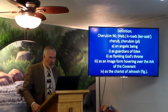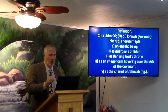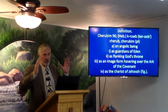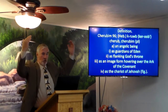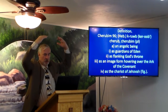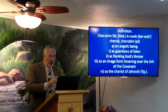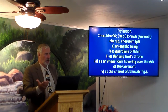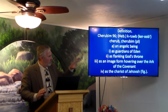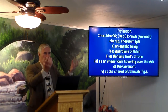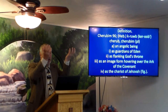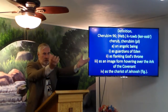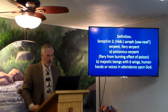As a third role, cherubim appear as an image hovering over the Ark of the Covenant — in artistic drawings, you have cherubim over the mercy seat on top of the ark. And they serve as the chariot of Jehovah figuratively: in the book of Ezekiel, the cherubim are holding up the throne of God, carrying it, moving it.